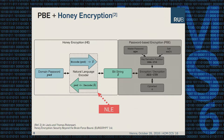Honey Encryption was introduced by Juels and Ristenpart at Eurocrypt 2014. Its main component is called a Distribution Transforming Encoder. As we are dealing with passwords, we call it a Natural Language Encoder, or NLE for short. The NLE has two algorithms: encode and decode. A bit string can be decoded to a plausible-looking domain password, and a domain password can be encoded to a bit string.